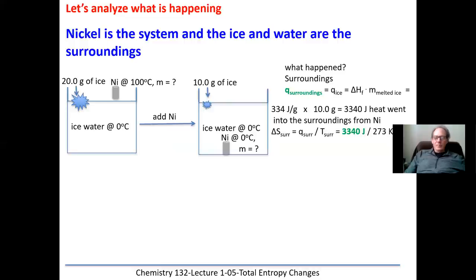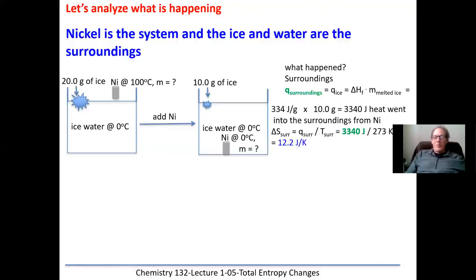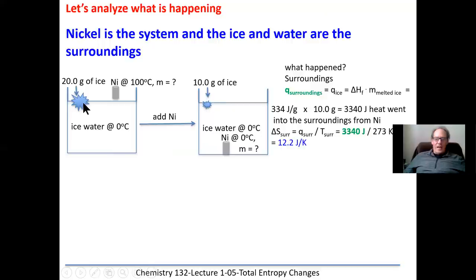The entropy change for the surroundings equals Q_surroundings divided by T_surroundings. The surroundings here are the ice water. The amount of heat is 3340 joules; we divide by 273 Kelvin, and we get a value of 12.2 J/K. The surroundings gained heat energy and became more random because some of the ice — which was in a crystal — entered the water, and water molecules have more randomness than the ice they came from, which was a well-defined crystal.